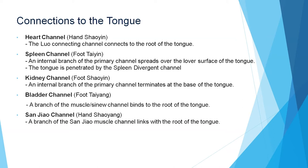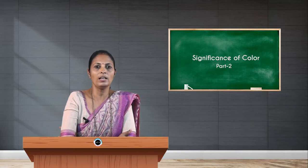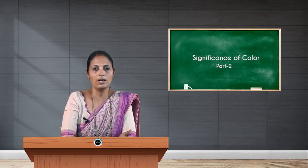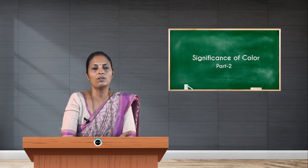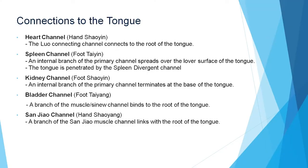Regarding the connections to the tongue, an important one is the heart channel. The fire element is represented by the heart and small intestine meridian. The heart mainly controls the brain according to TCM — the regulator of the brain is the heart channel. So all mental functions will be disturbed if there is any dysregulation of the fire element, and this can be reflected by observing the tip of the tongue.